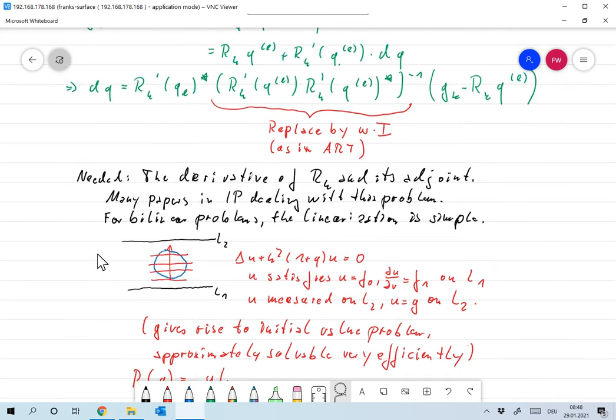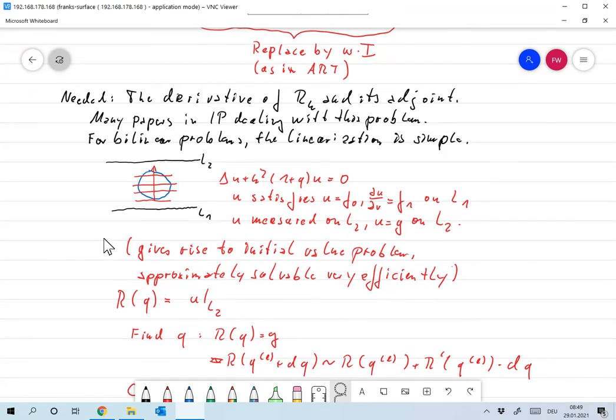For bilinear problems, and by bilinear problems I mean problems where the variables appear as a product, and that's the case of course for the Helmholtz equation because you have that unknown Q and the unknown function U there, so that's the product bilinear which is bilinear in Q and U. In these bilinear problems the derivative can be very simply derived, and I want to demonstrate that with the inverse scattering problem but I want to slightly change the boundary condition because I had this unpleasant radiation condition at infinity which I didn't go into detail about.